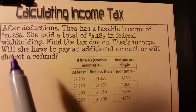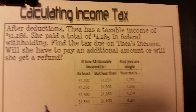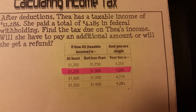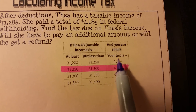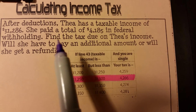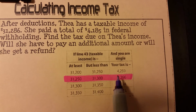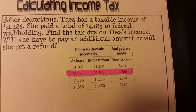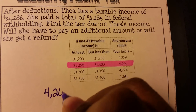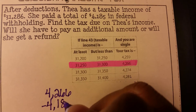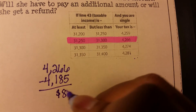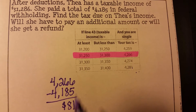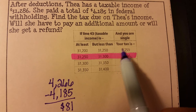With your highlighter, highlight where she lies on the chart. You should have found that her tax is $4,266. She paid $4,185 in federal withholding. We take $4,266 and subtract $4,185, and we get $81. The question is: will she have to pay an additional $81, or will she get that back? Look at what she has paid in total withholding versus what the tax is.